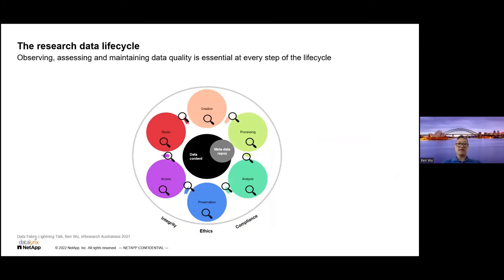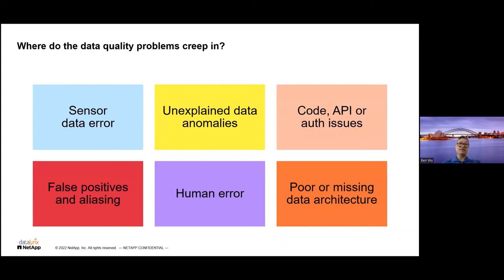All around the research data life cycle, data goes through several steps in the process. The first one is creation, where data gets ingested or created by a model, and then around the life cycle there's processing, analysis, preservation, access, and reuse. At each step, errors can creep into data and metadata.